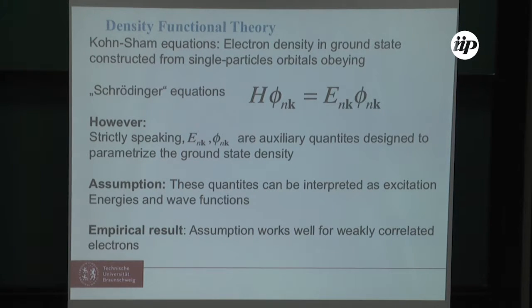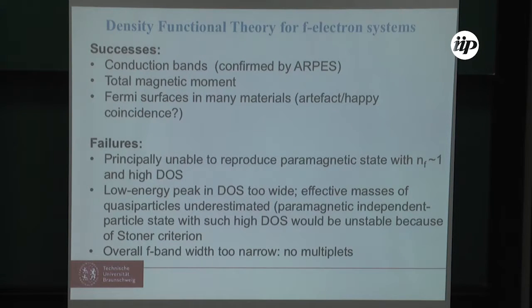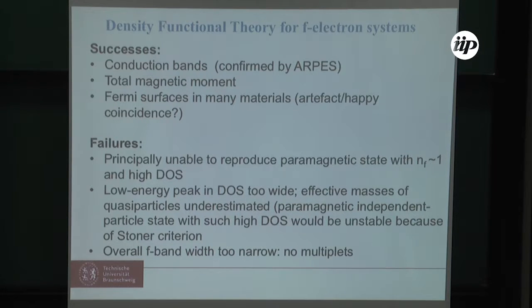The question is whether we can use this ansatz in strongly correlated systems. Looking at the most strongly correlated f-electron systems, there are successes: the conduction bands in these materials are typically well described by density functional theory, confirmed by ARPES measurements. Typically the total magnetic moment is well described, and in many materials the Fermi surfaces are also reasonably well described. The question is whether this is a happy coincidence or an artifact — how can we understand that Fermi surfaces are well described by density functional theory?